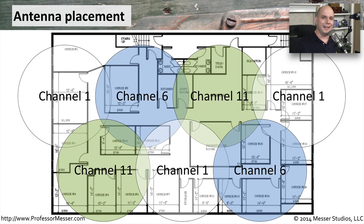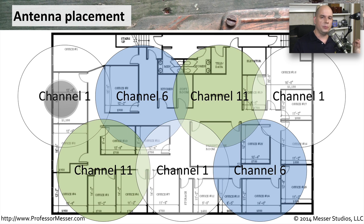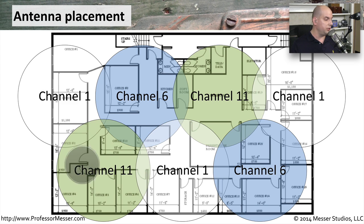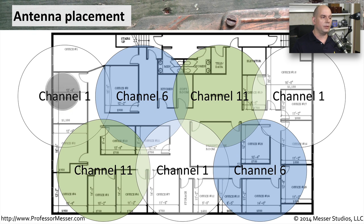Let's overlay what a layout might look like for wireless access points. In this particular case, I've overlaid where the signals might be for these omnidirectional antennas, and you'll notice what I've tried to do is put channels onto this that would not overlap or interfere with the channels that are directly next to us. For 802.11b, we know that Channel 1, Channel 6, and Channel 11 are completely separate channels that do not overlap with each other, so we've chosen to use those three.